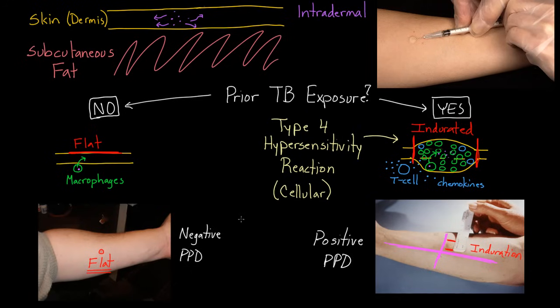Now one thing I forgot to mention is that you're going to be reading these PPDs 48 to 72 hours after you initially injected the protein. So 48 to 72 hours later, this is when you actually read the PPD. And that's very important because that gives enough time to either go flat like this or to actually get indurated like that.